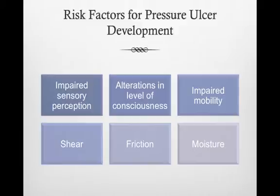Patients who are confused or disoriented are also unable to protect themselves. Shear is a force exerted parallel to the skin resulting from both gravity pushing down on the body and resistance. Friction is a force of two surfaces moving across one another, such as a mechanical force exerted when the body is dragged across another surface. The presence and duration of moisture on the skin reduces the skin's resistance to other physical factors.